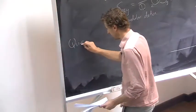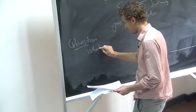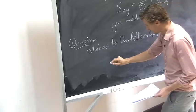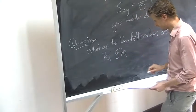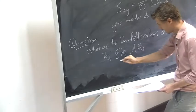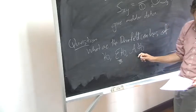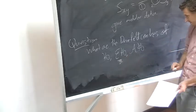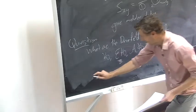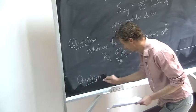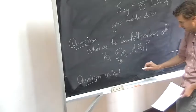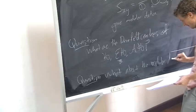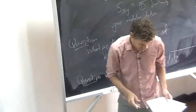The question we're trying to answer is: what are the Drinfeld centers of some of these interesting fusion categories coming from subfactors? The Drinfeld centers of the Haagerup fusion categories and the Izumi-Haagerup fusion categories are already pretty much known by other people. The new thing we're bringing to the table is information about the Drinfeld center of extended Haagerup. The easier question — which I'll answer today — is not the whole Drinfeld center as a modular tensor category, but just the modular data. And that's where this machine comes in.